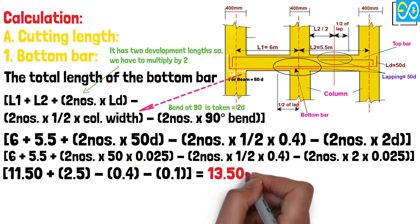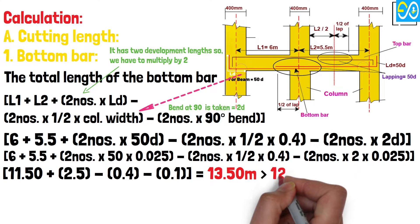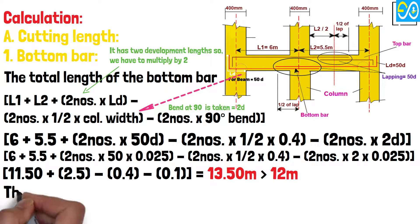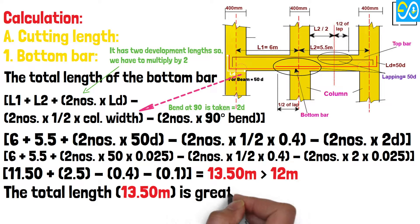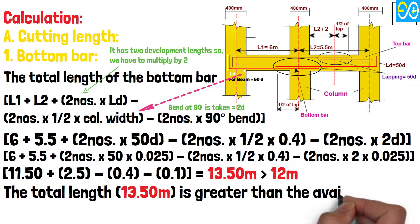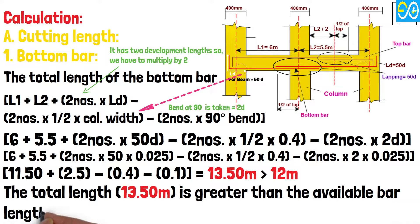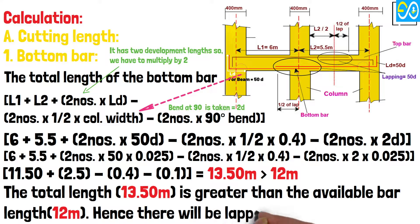The total length 13.5 meters is greater than the available bar length of 12 meters. Hence there will be lapping in the bar.